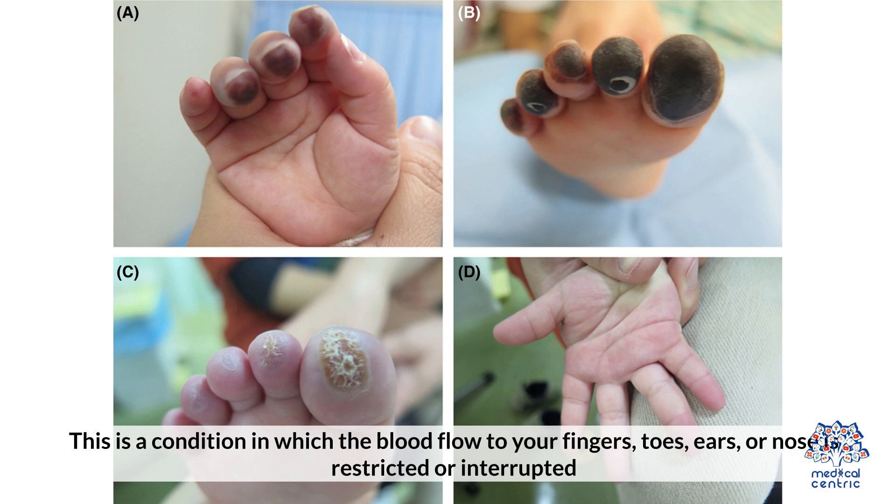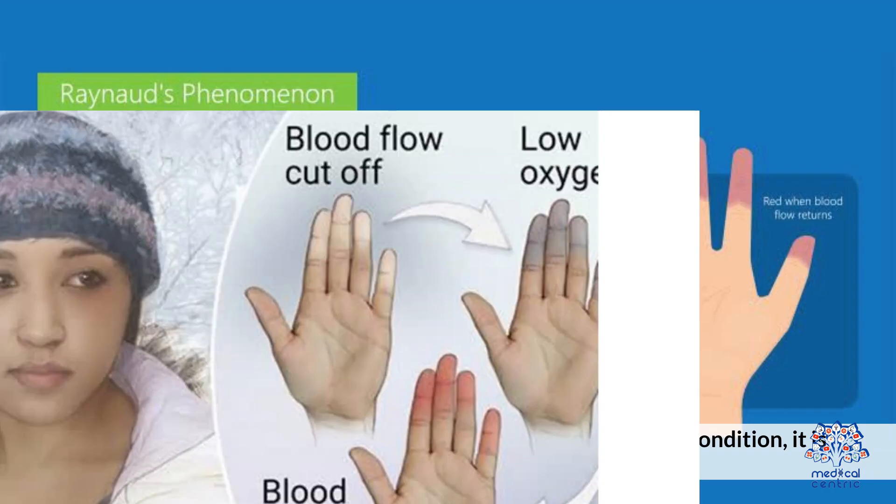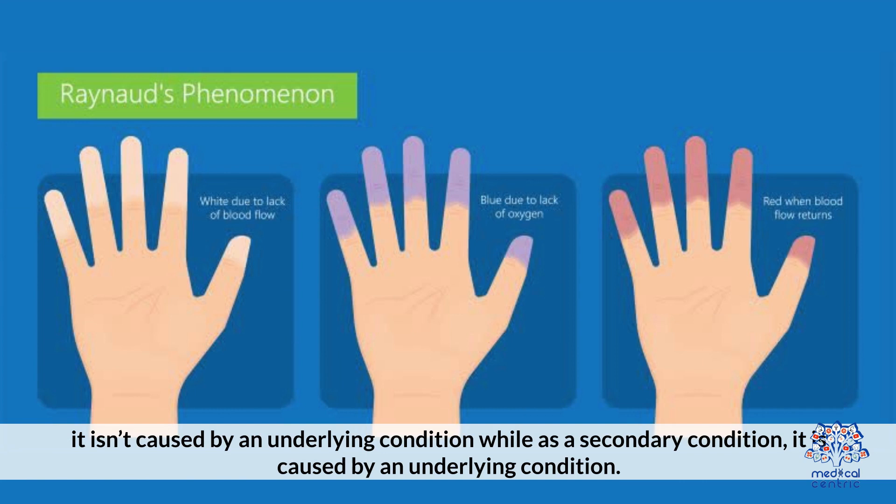It can be a primary or secondary condition. As a primary condition, it isn't caused by an underlying condition, while as a secondary condition, it is caused by an underlying condition.